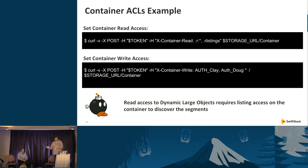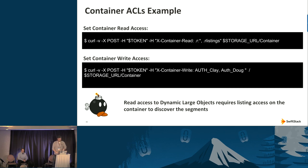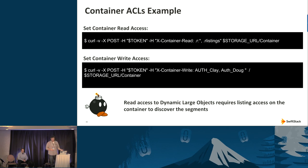There's synergy between listings and large objects. Dynamic large objects have a limitation: to generate the full object, Swift must be able to do a container listing. So if you want to make a DLO manifest publicly accessible, you can't just give the manifest and segments the read option with a wildcard — you also have to enable the listings option on the DLO segment container. SLOs have an advantage here because the components are explicitly listed in the manifest; there's no container listing step — you just need to be able to retrieve the manifest.